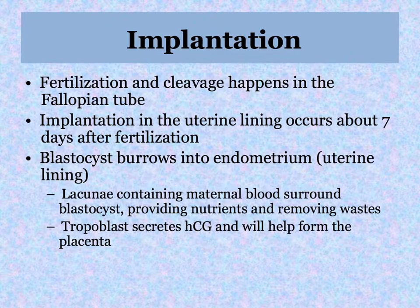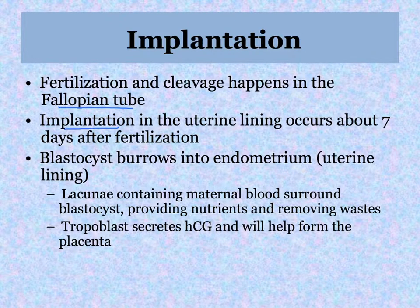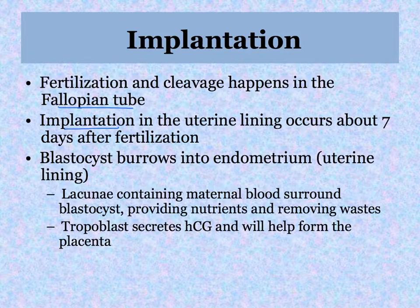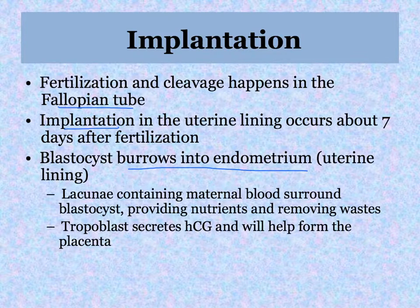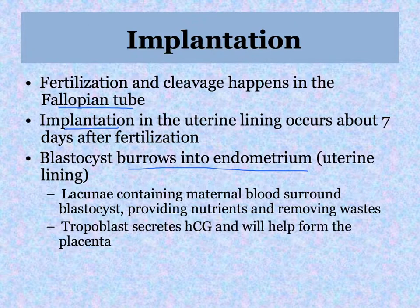The next major step is implantation. Fertilization and cleavage happen in the fallopian tube over several days. Implantation occurs in the uterus about seven days after fertilization. If fertilization happens on day 14, then implantation is around day 21 in the 28-day cycle — before a woman would be anticipating the start of her next period. The blastocyst burrows its way into the endometrium, which has been nourished by progesterone released by the corpus luteum that developed in the ovary after ovulation.